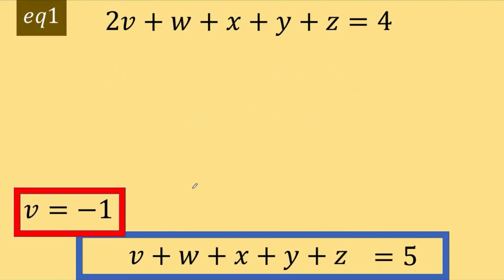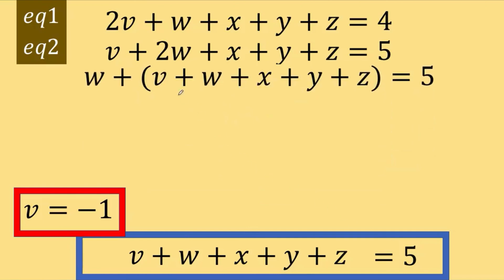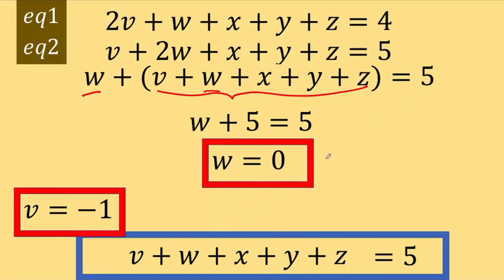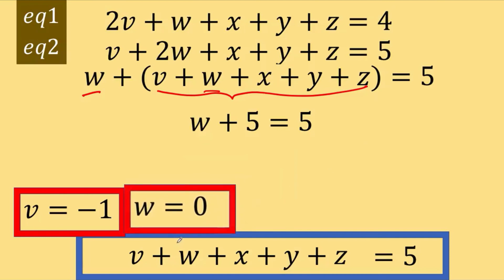Next, let's look at equation number 2. This is equation number 2. And let's reorganize again the terms in such a way that this sum is grouped together because we know the value of that is 5. Split this 2w as w plus w and then copy the v plus x plus y plus z. That's equal to 5. But again, this is equal to 5. So, we have w plus 5 equals 5, which gives us w equals 0. So, we now have the value of w, and let's put this aside.